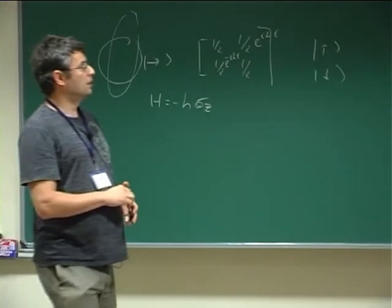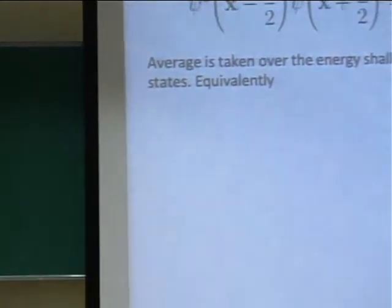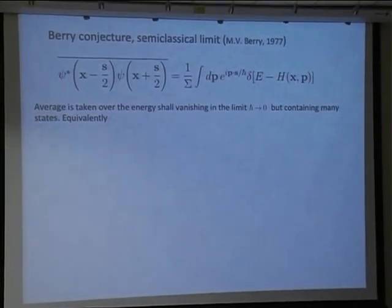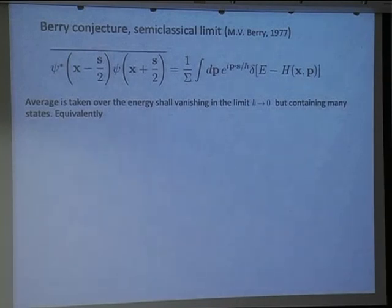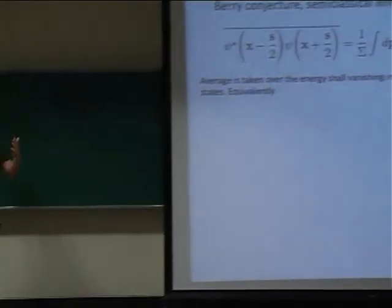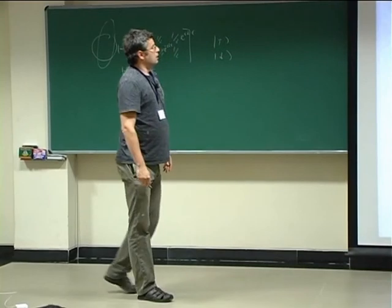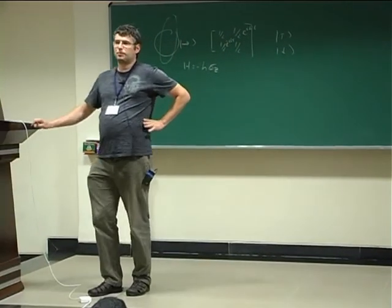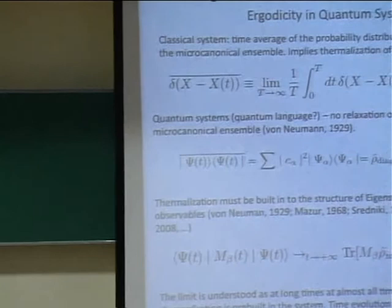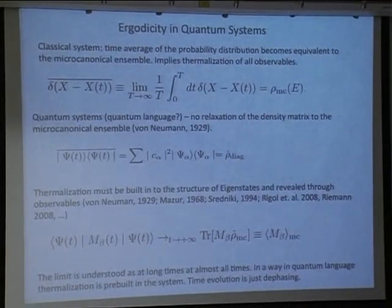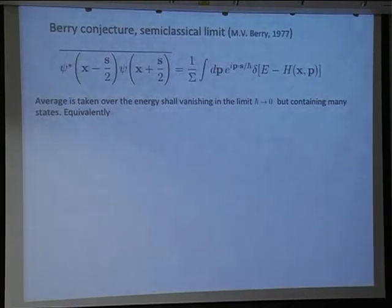This raises the question of whether you 'look' at the object — it's completely irrelevant. If you apply a field for a long time with a duration that slightly fluctuates from experiment to experiment, or you simply don't know it, then from your point of view it's a completely measured system. It doesn't matter whether you look at it. I'm still coming to Berry conjecture — let me get there.